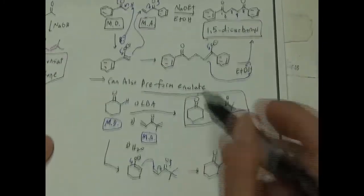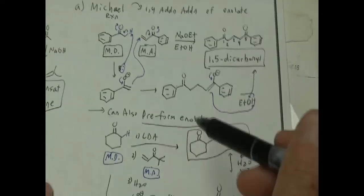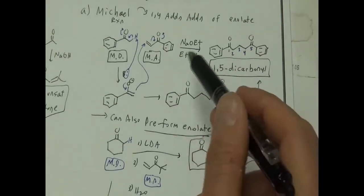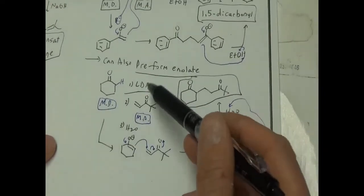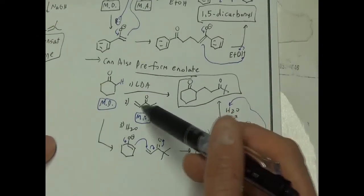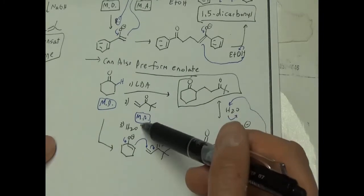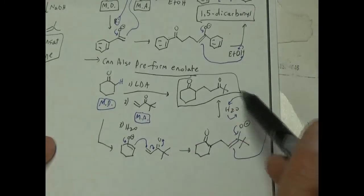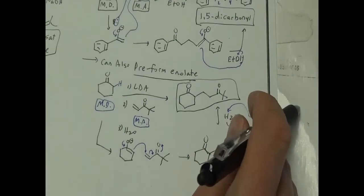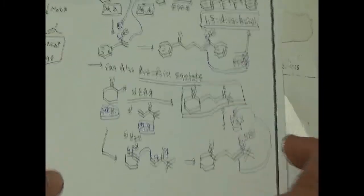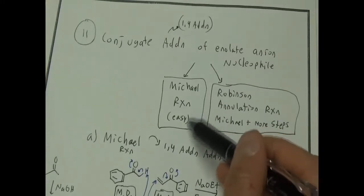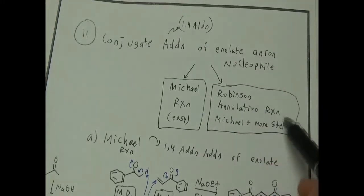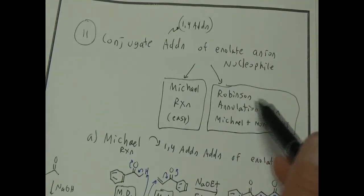To summarize these two examples: in one case we're using sodium ethoxide and ethanol. In the other case, we use a super strong base, throw in the Michael acceptor, and then use water as the protonation source. The Michael reaction is what we're talking about, and the Robinson will be the next, slightly more complicated one.